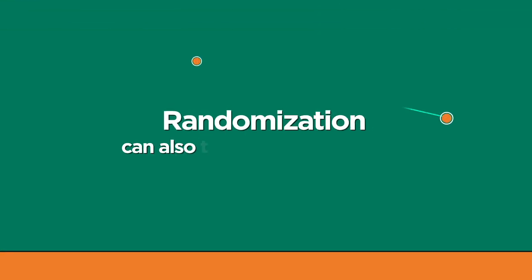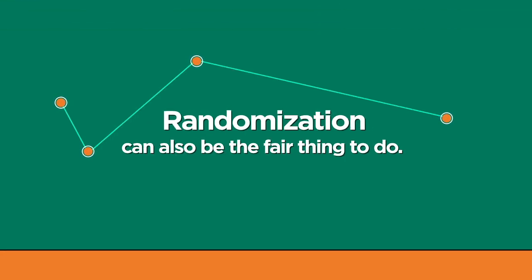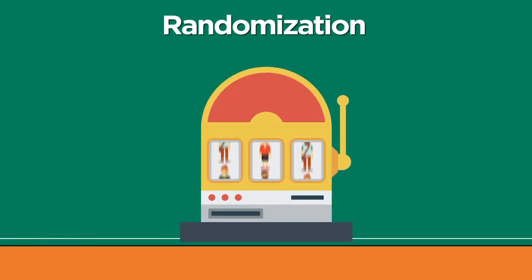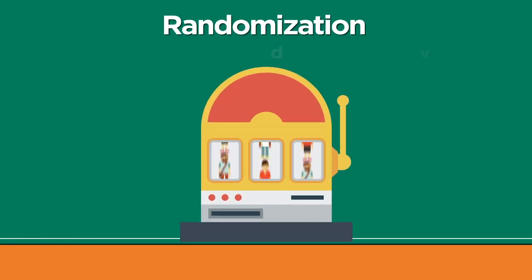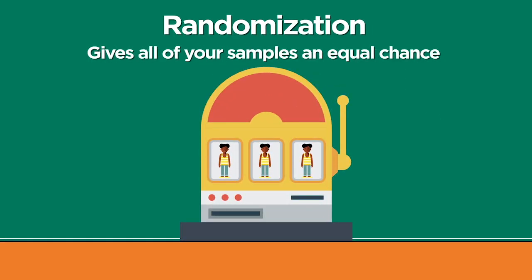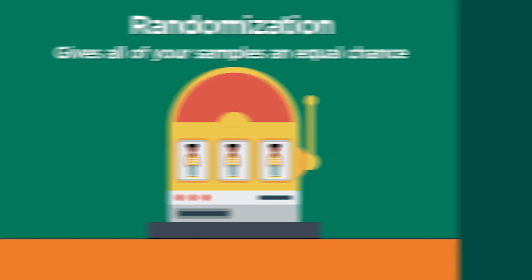Randomization can also be the fair thing to do. When you're not sure what version will work, randomization is like a lottery that gives all of your sample an equal chance of getting each version.